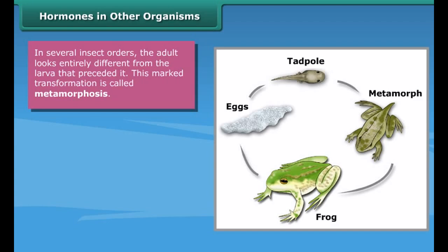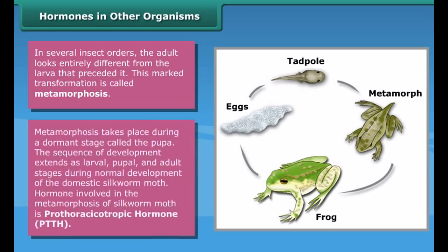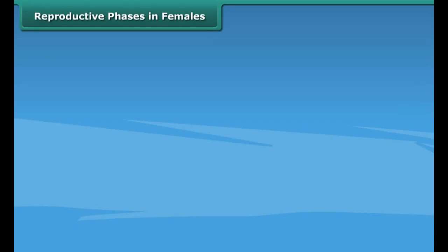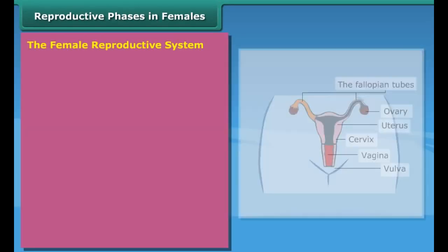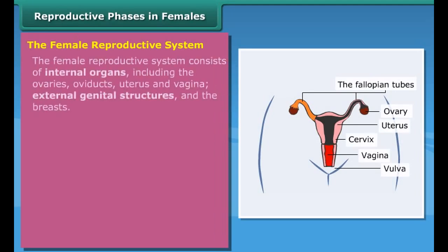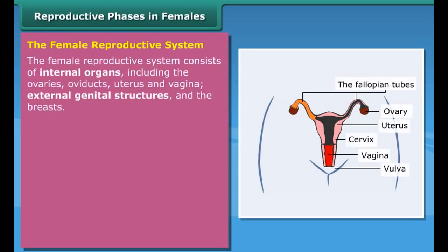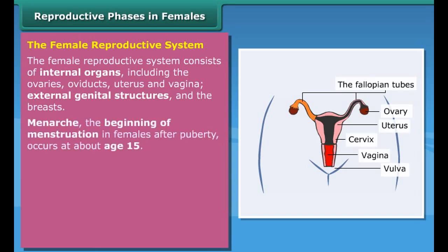These steroid hormones contribute to the development and function of the female reproductive organs and sex characteristics. At the onset of puberty, estrogens promote the development of the breasts, distribution of fat evidenced in the hips, legs, and breasts, and maturation of reproductive organs such as the uterus and vagina. Together, progesterone and estrogens are responsible for the changes that occur in the uterus during the female menstrual cycle.